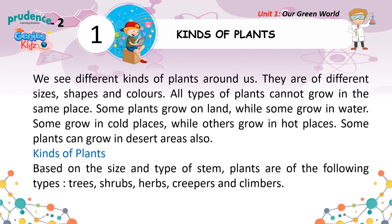We see different kinds of plants around us. They are of different sizes, shapes and colors. All types of plants cannot grow in the same place. Some plants grow on land, while some grow in water. Some grow in cold places, while others grow in hot places. Some plants can grow in desert areas also.